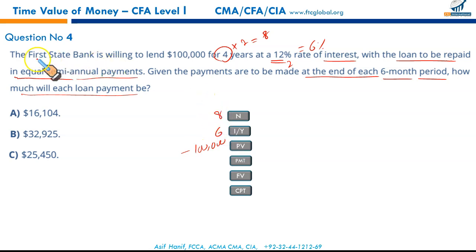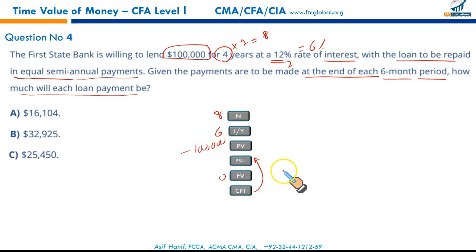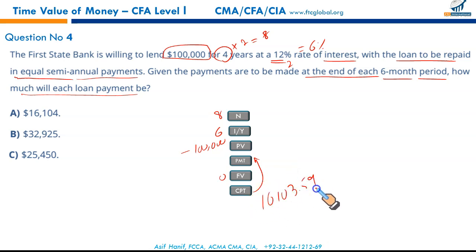N = 8, I/Y = 6%, PV = $100,000 (the loan amount received now), FV = 0. Simply press CPT payment and you will get your result. Punch it in and your result should be $16,103.59.